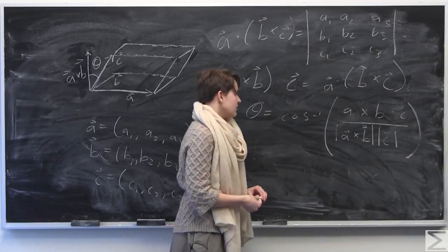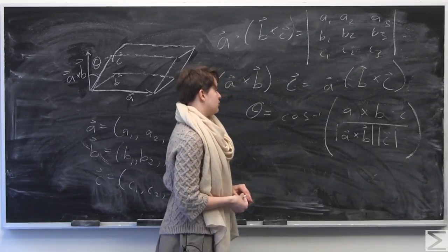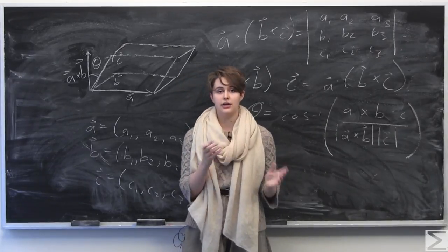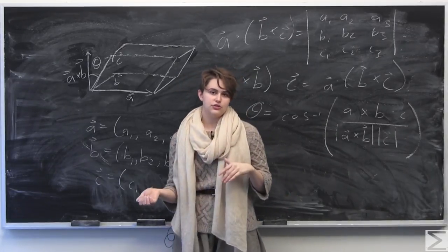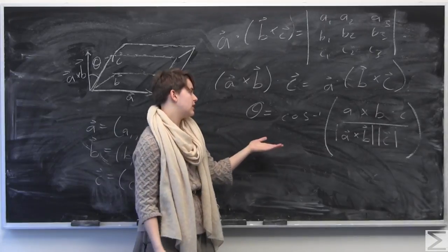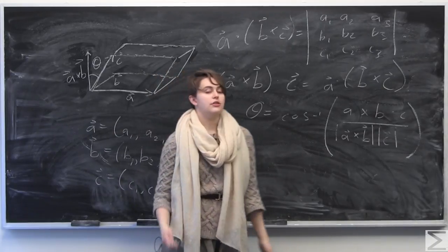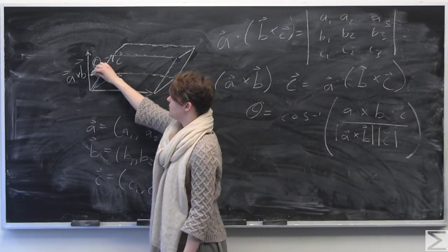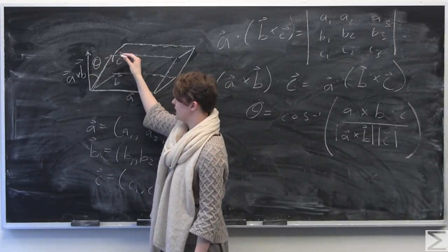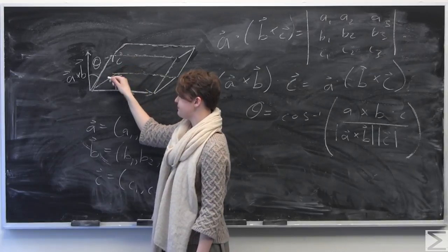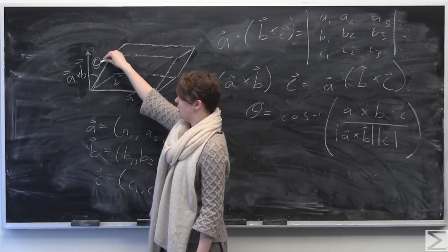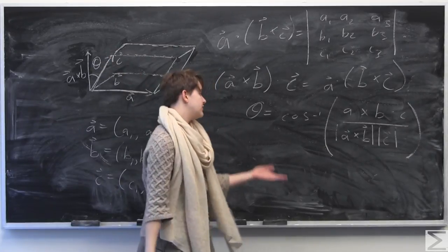Okay, so finally, that's kind of a cool property we have here is just as we had some way to define theta in the dot product and the cross product, we also have some way to define theta with a triple product. So theta here is the distance between A cross B, or is the distance in radians here between A cross B and the vector C. So we can find this quantity here, theta, we can find this angle here, theta, using the following formula.